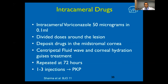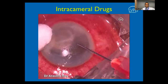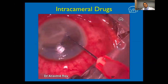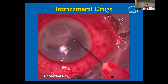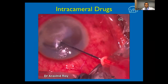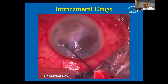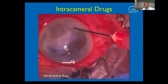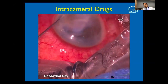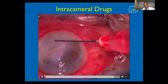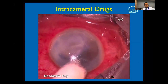Intracameral drugs have also been used, with several anecdotal reports on the use of intracameral agents in deep-seated corneal mycotic keratitis. The technique consists of injecting voriconazole into the mid to deep stroma; a dose of 50 micrograms in 0.1 ml is administered in divided doses across the lesion. It is important to see the fluid wave in the corneal stroma once you inject the drug, as shown in the representative video where voriconazole is injected all around the lesion.